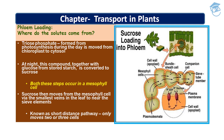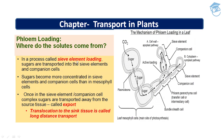In a process called sieve element loading, sugars are transported into sieve elements and companion cells. Sugar becomes more concentrated in the sieve element and companion cell than in mesophyll cells. The pathway goes from mesophyll cell to bundle sheath cell, then to phloem parenchyma — which may be a transfer cell or intermediary cell — then to the companion cell, and finally to the sieve element. Once in the sieve tube element-companion cell complex, sugars are transported away from the source tissue, which is called export.